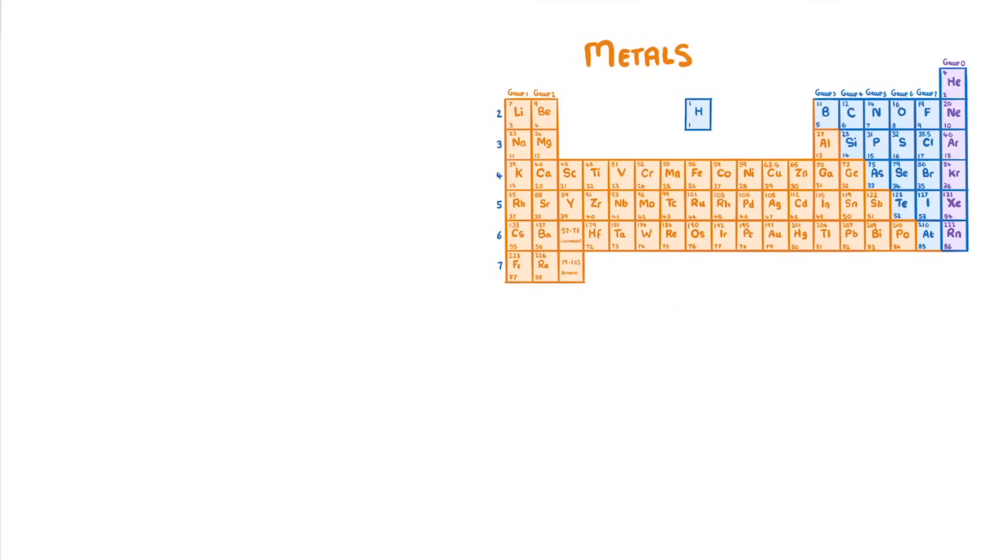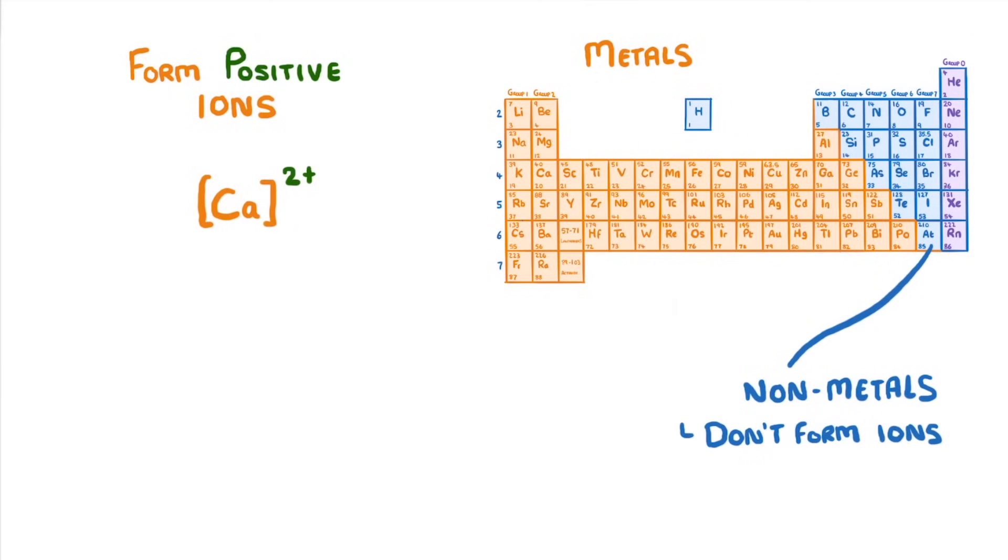One of the key features of metals is that they form positive ions when they react, like a calcium 2+ ion. Whereas non-metals either don't form ions, like carbon, or they form negative ions, like chloride 1-.